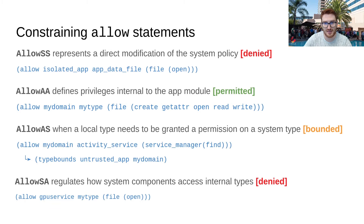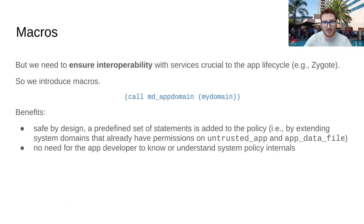Finally, we have allow SA, which occurs when a system type is granted privileges on a local type. This is necessary as we need to provide interoperability with system types, but may not be safe, as it may lead to a confused deputy attack, changing the security assumptions of a system service. So we deny its explicit use, but since we need it, we provide a safer alternative: macros. Macros are better because they add a predefined set of policy statements, which let the system policy retain control on the system types involved in the policy module, as they cannot be edited or changed by the developer.